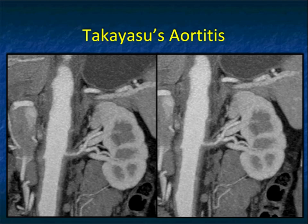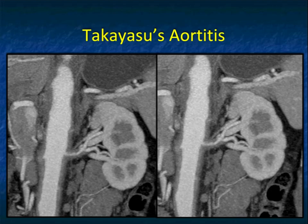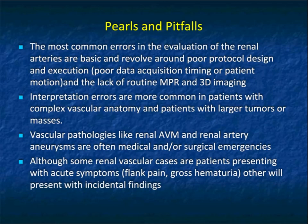Other vasculitis — Takayasu's arteritis is a large vessel disease. Here you can see soft tissue thickening surrounding the patient's left renal artery. In Takayasu's, the most common vessel involved is the left subclavian artery, which was involved in this patient. But here you can also see the aorta and left renal artery involved — very important for making the correct diagnosis.